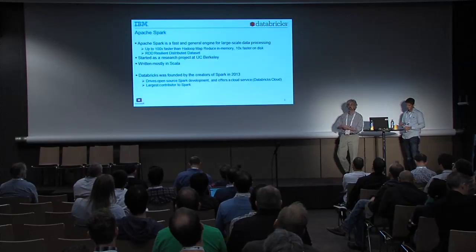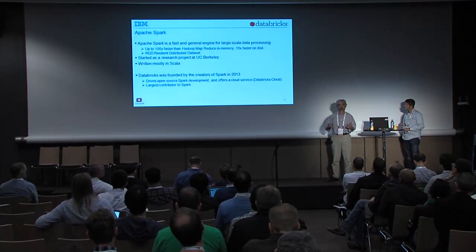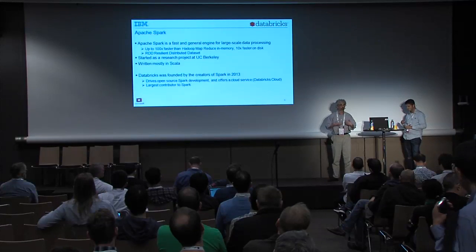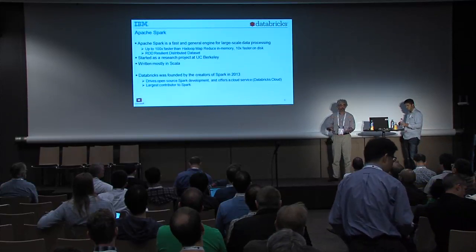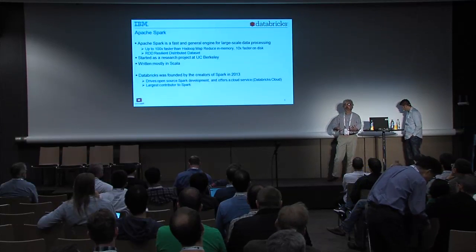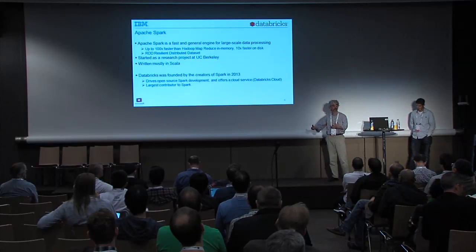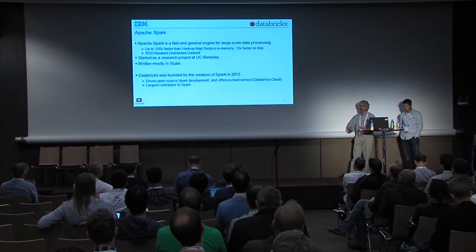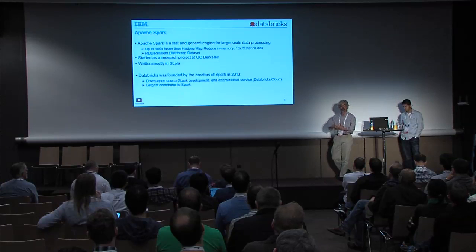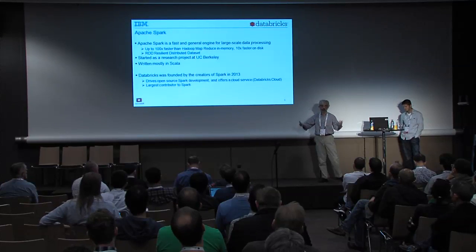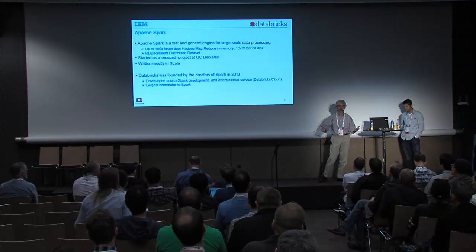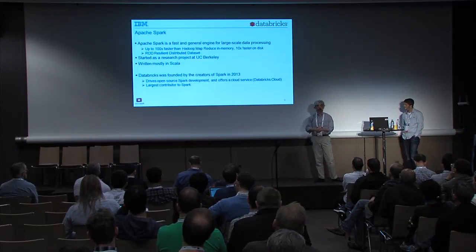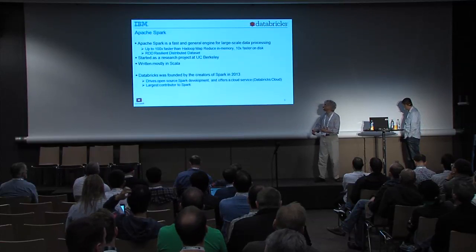In Hadoop, each time a Map or Reduce task produces output, it writes it to disk. That persistent copy is used for communication between stages and to protect the computation. With RDDs, everything is kept in memory. To deal with recovery, they keep track of the lineage — how something was computed — and in the event of a failure, they redo the computation based on that lineage. Failures, while they happen, are still relatively rare.